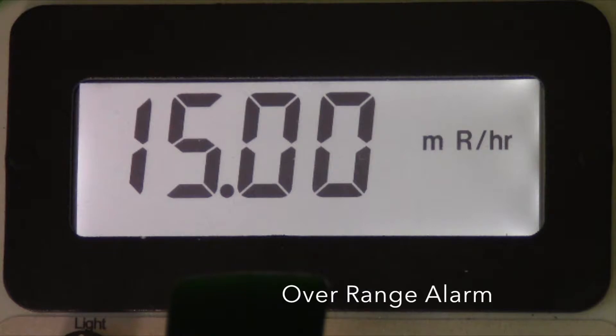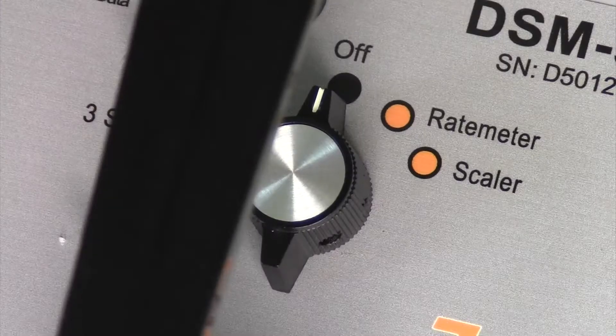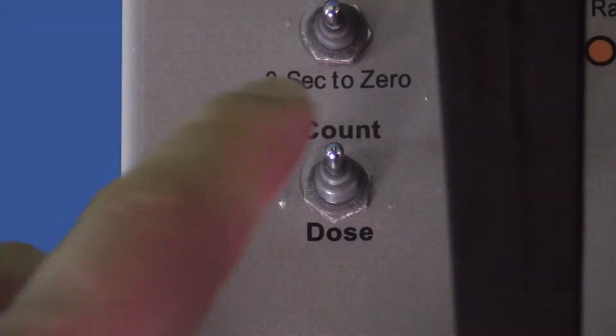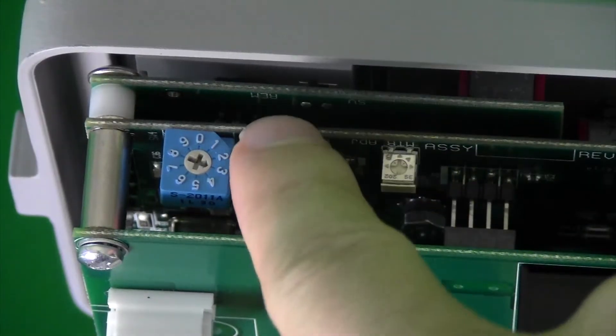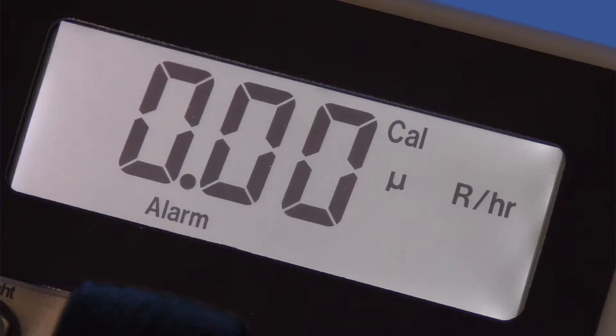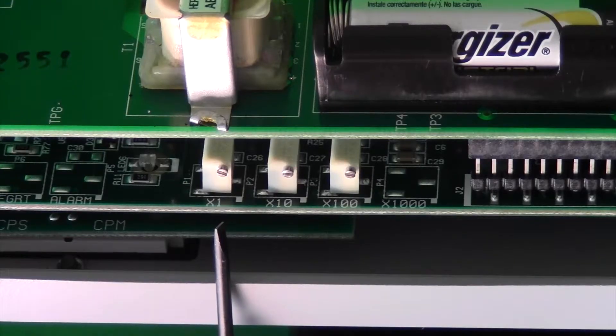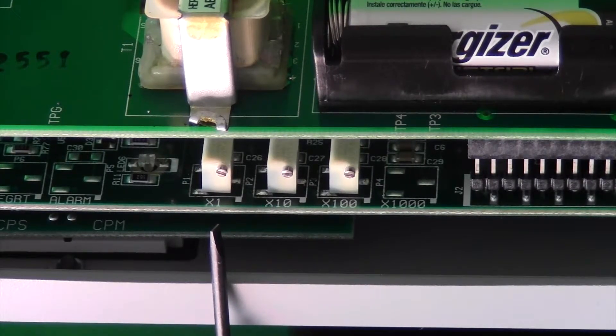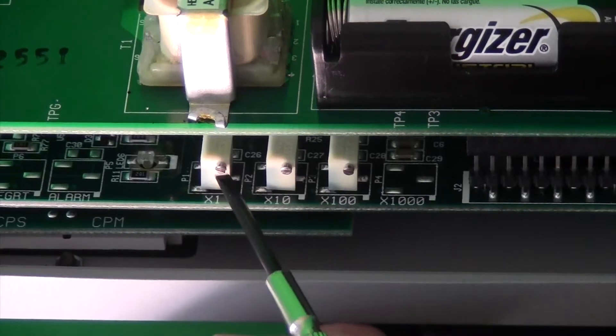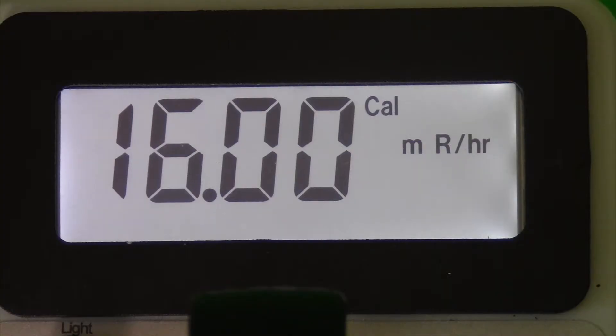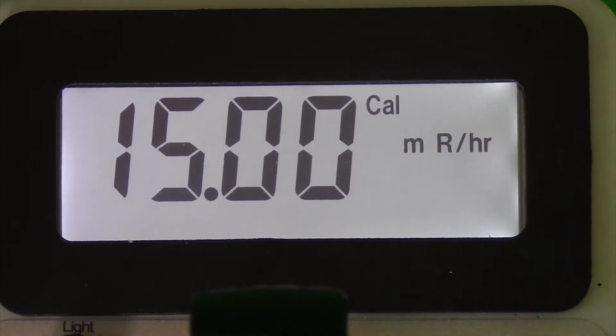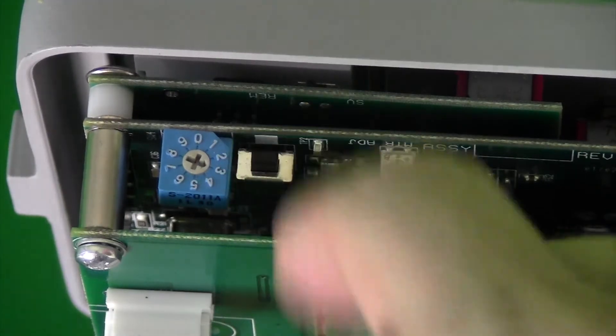For the overrange alarm setting, the procedure is similar. Make sure the meter is on Rate Meter Dose Mode, but turn to position 3 on the internal blue switch SW4. Again, press the black button SW5 so that the word CAL appears on the display. We again locate the P1 and P2 potentiometers. Turning the screws, toggle to the desired set alarm rate. This time, 15 microroentgen per hour. Press the black button SW5 again. Turn the blue switch SW4 back to zero.